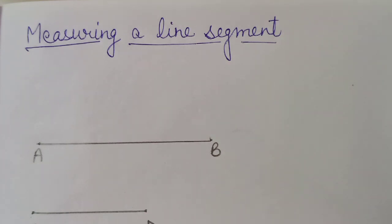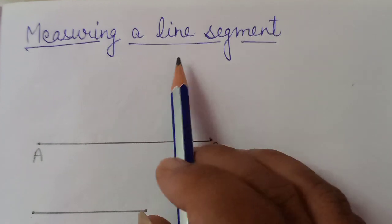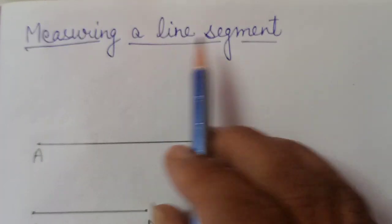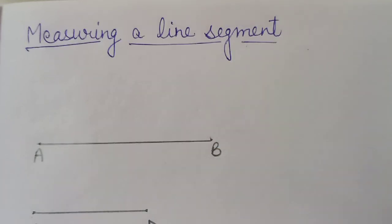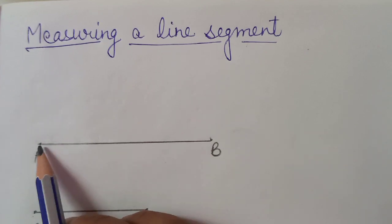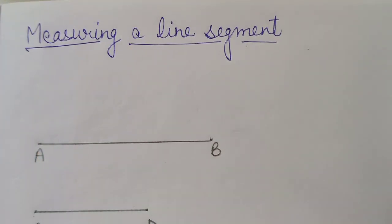Means we have to measure a line segment. It's not a line, it's a line segment. We have studied what is line segment. We can measure which has two end points. Like in this case, we have these two points A and B.